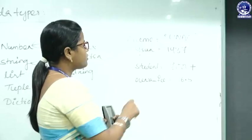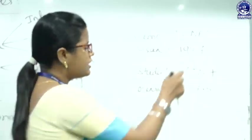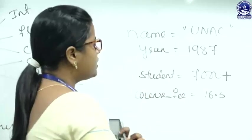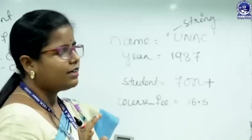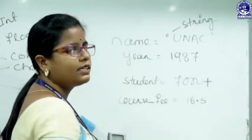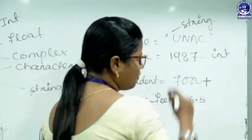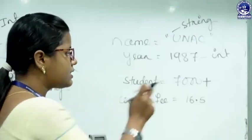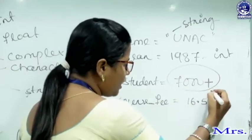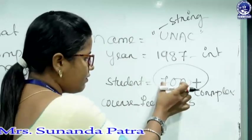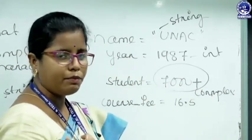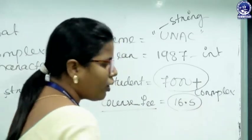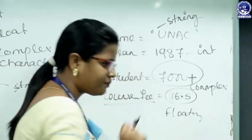Let's take an example. Suppose the first variable is named 'name' and the value is UNSE — this is a group of characters, so we refer to it as a string, and UNSE is enclosed within double quotes. Next we have a variable 'year' with value 1987 — this is an integer data type. Next we have a variable 'student' with value 7000 plus — this is a complex data type because we have 7000, which is a number, and plus, which is a symbol.